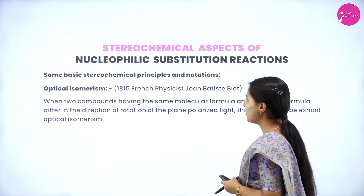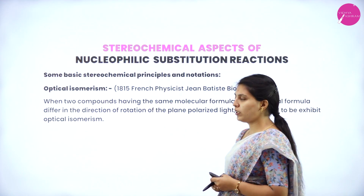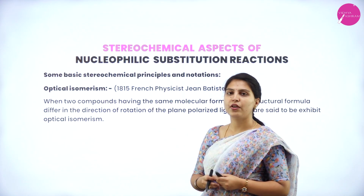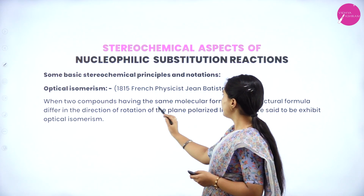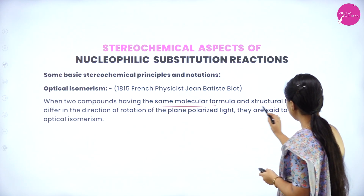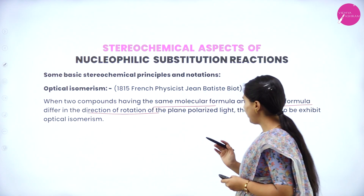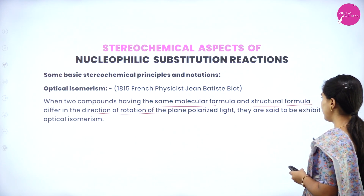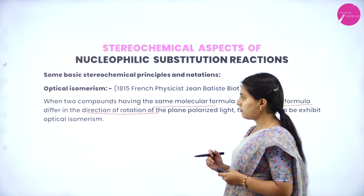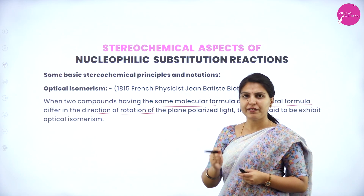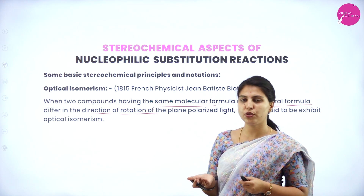What is optical isomerism? In 1815, French physicist Jean-Baptiste Biot studied optical isomerism first. When two compounds have the same molecular formula and structural formula but different direction of rotation of the plane polarized light, they are said to exhibit optical isomerism. Two compounds having the same molecular formula — molecular formula will be same in the two different compounds.